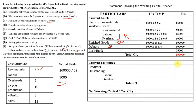Under current liabilities, creditors: rate is always on raw material, so 5,000 × 5 × 2 weeks = 50,000. Outstanding wages: time lag is 2 weeks, so 5,000 × 3 × 2 = 30,000. Outstanding overhead: 5,000 × 2 × 2 = 20,000. Total current liabilities = 1,00,000. Net working capital = current assets minus current liabilities = 5,50,000 − 1,00,000 = 4,50,000 rupees.